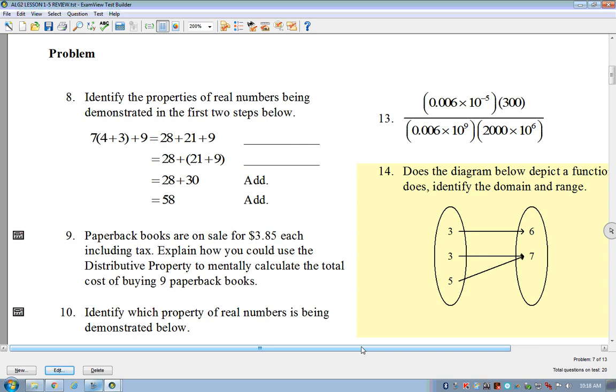Okay. Number 8. Identify the properties of real numbers being demonstrated in the first two steps. So, basically, what we're saying is, how do I get, what is happening that's taking me from here to here? Distributive property. Right? You're doing 7 times 4 plus 7 times 3. That's how we're getting 8 and, or 28 and 21. Right?